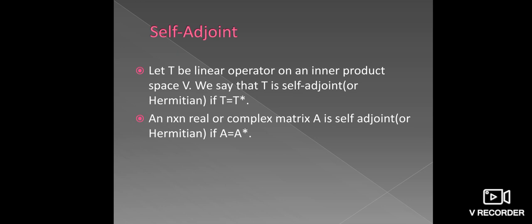Similarly, a matrix A is a real or complex matrix with n×n entries. If A is said to be self-adjoint or hermitian, the condition is A = A*.